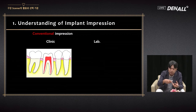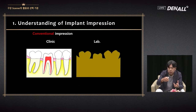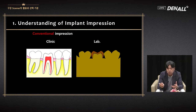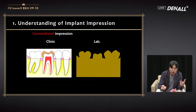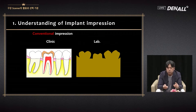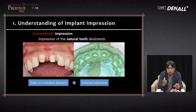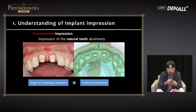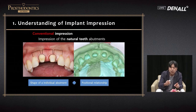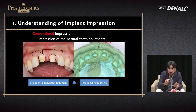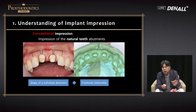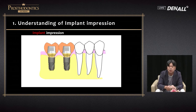For posterior region conventional impression taking, after preparation is completed, impression is taken with rubber and sent to the lab — the stone model is made, die trimming is done, and restoration is made and sent to the clinic where it is attached. The analog impression requires capturing the shape of the abutment, adjacent tooth, and the positional relationship between the prepared tooth and adjacent tooth — both must be registered.